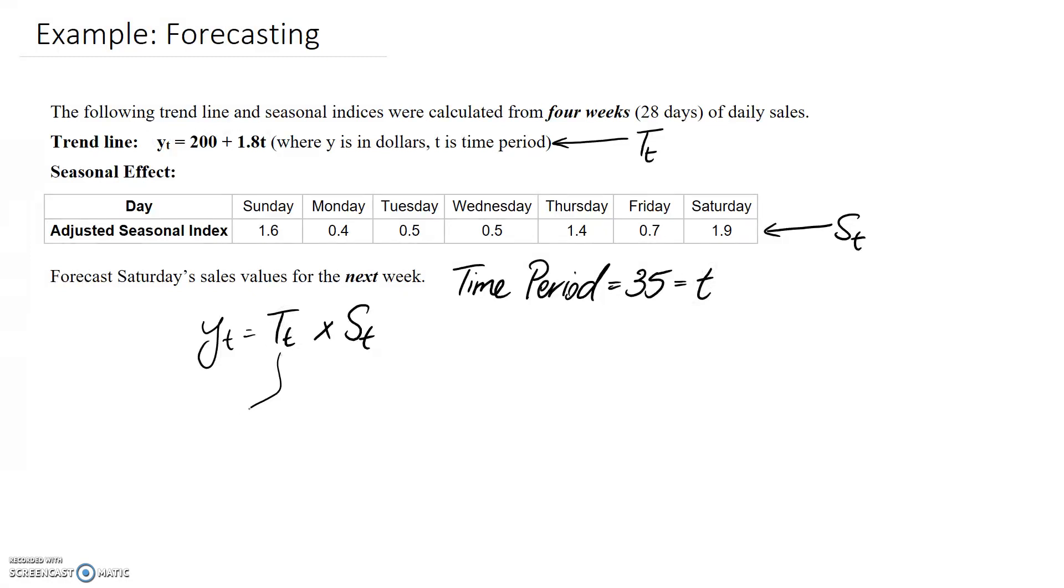Let's start by working out the T(t) part by plugging into the trendline equation. It's going to be 200 + 1.8 × 35, which equals 263.